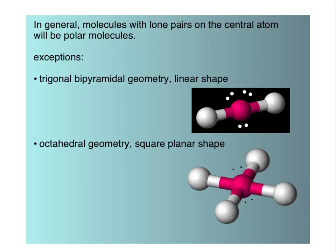And the other exception is the trigonal bipyramidal geometry linear shape. And so even though there are lone pairs on the central atom, the attached atoms are directly across from each other and would cancel each other out in terms of attracting electrons.